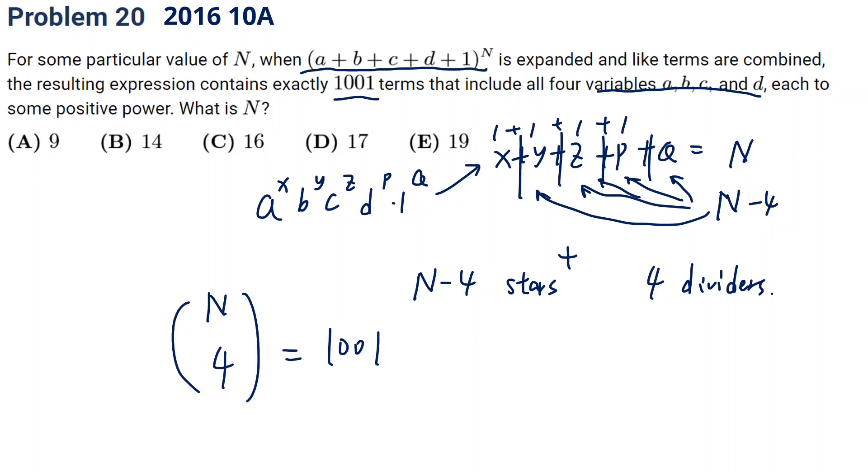We have to solve this. This equals N times N minus 1 times N minus 2 times N minus 3, divided by 24, equals 101. Factorizing: 101 is 11 times 91, and 91 is 13 times 7. From here, N equals 14. Fourteen times 13 times 12 times 11, divided by 24, leaves 7 times 13 times 11, which equals 101.